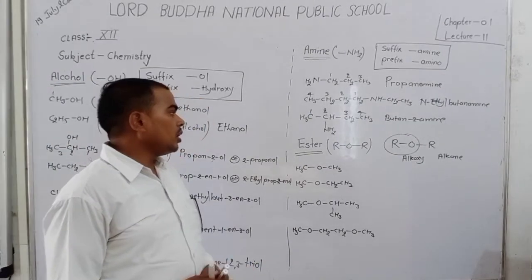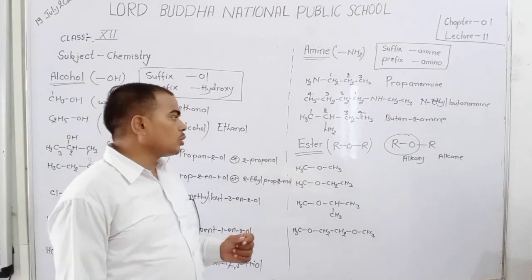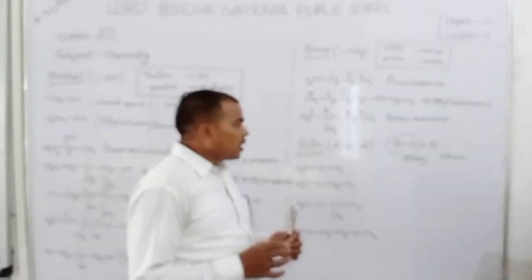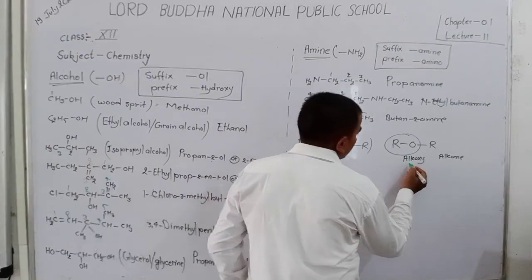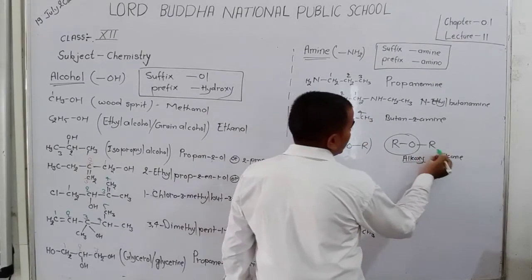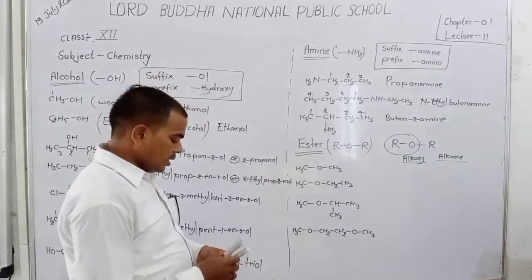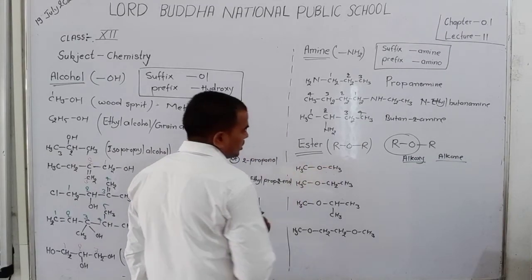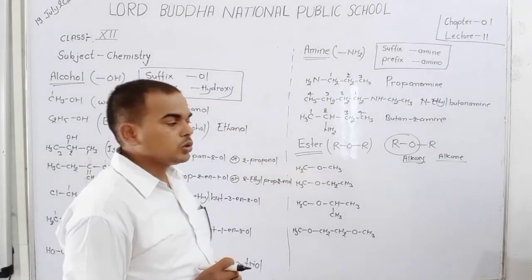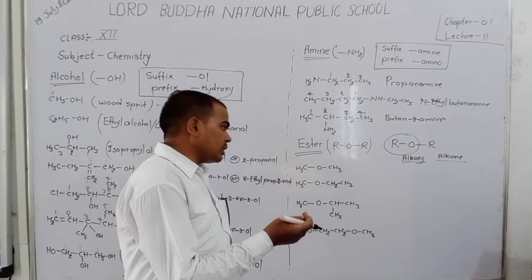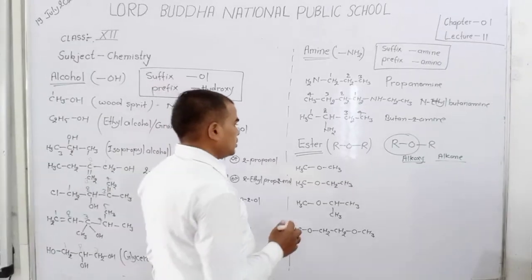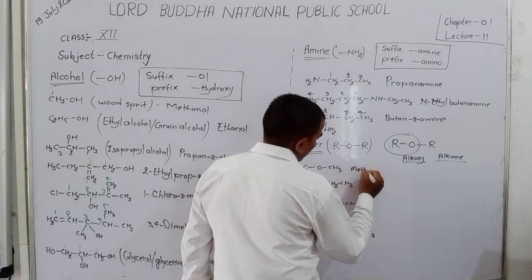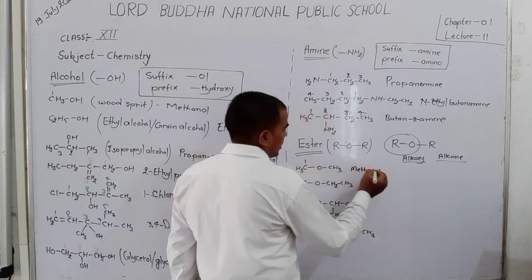Dear students, now let us discuss the ether group. In the ether group, two alkyl groups are connected with oxygen. The smaller alkyl group is treated as 'alkoxy', and the larger alkyl group is treated as 'alkane'. For example here, both sides are symmetrical because one carbon is present on each side. So you treat one side as alkoxy and one side as alkane. The name of this compound: methoxy (for one carbon) + methane = Methoxymethane.